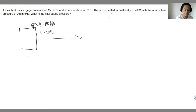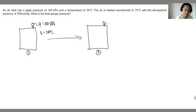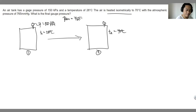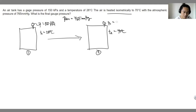This is heated isometrically — state 1 transitioning to state 2. The tank still has the gauge pressure indicator. It is heated isometrically to 70 degrees Celsius, so temperature at state 2 is equal to 70 degrees Celsius. The atmospheric pressure P_ATM is equal to 765 mmHg. We are asked: what will be the final gauge pressure?